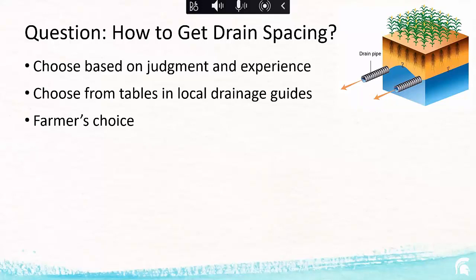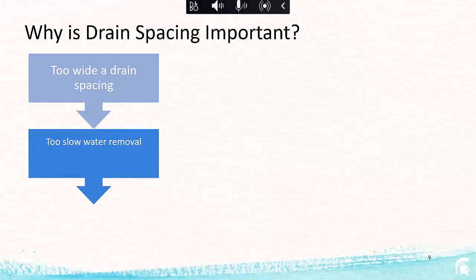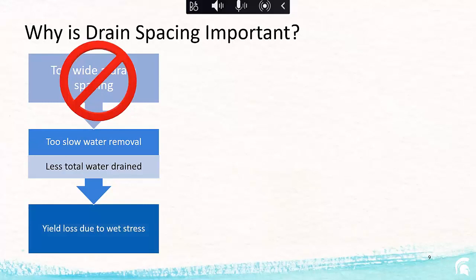Why is drain spacing important? If we choose a drain spacing based on ranges from drainage guides and it turns out to be too wide for that specific location, water removal is going to be too slow. Drain spacing that's too wide results in less total water being drained, and that's going to result in yield loss due to wet stress — which is the very thing drainage is meant to prevent.